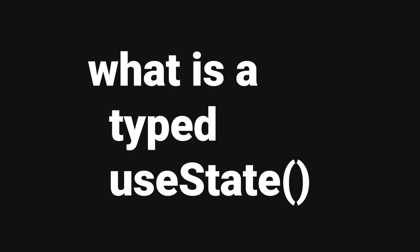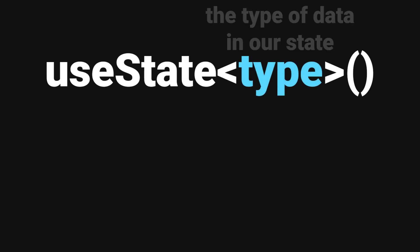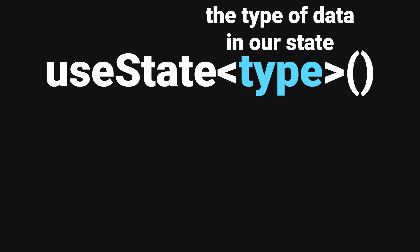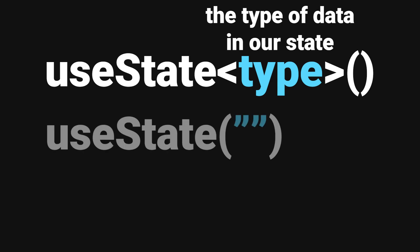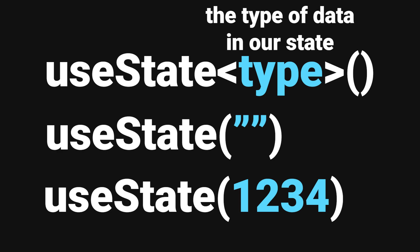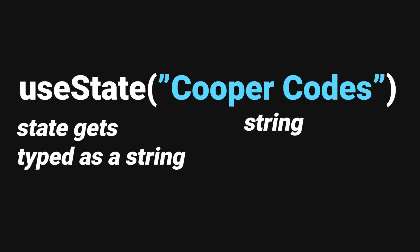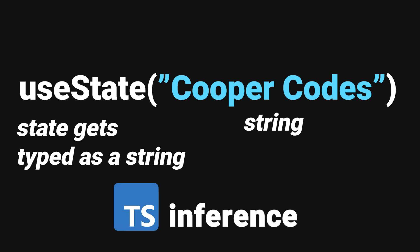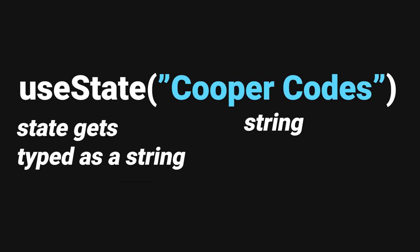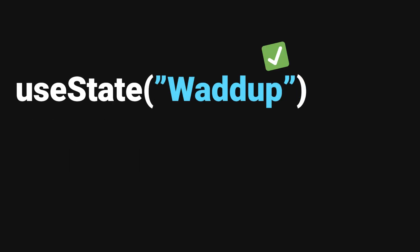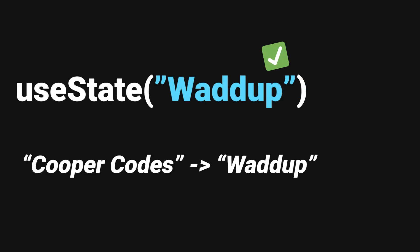So what is a typed useState? When we initialize useState, we can tell TypeScript exactly what type of data we are expecting to have in our state. For some types of data, we don't have to explicitly define the actual type. For example, take a look at useState with 'Cooper Codes'. Cooper Codes here is a string, and so TypeScript will automatically type our state as a string. This is called an inference — TypeScript is inferring that the type we put in is a string. So if we ever tried to change our state to another string, the state will have no errors because we are replacing a string with another string.